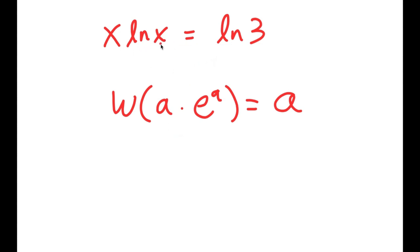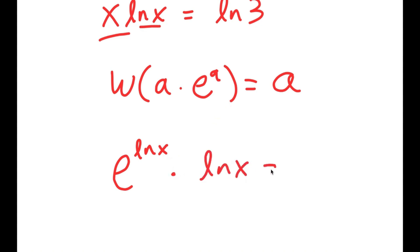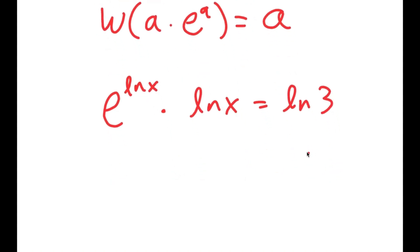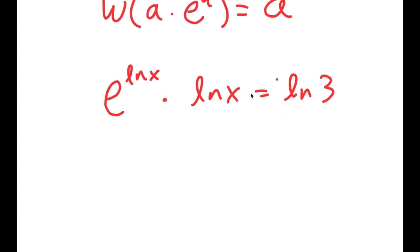I'm going to start by rewriting x as e to the power of ln of x, because e to the power of ln cancel out, so x is all that remains. So x is the same thing as e to the power of ln x, and I have this times ln x is equal to ln 3. Now notice how this is in the form a times e to the power of a, with a being ln x. So it's ln x times e to the power of ln x is equal to ln 3.